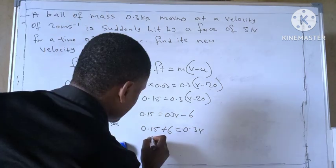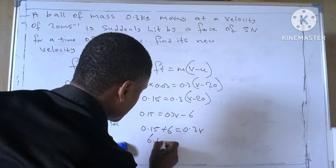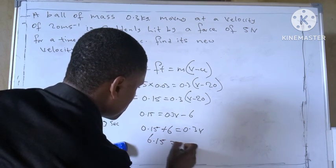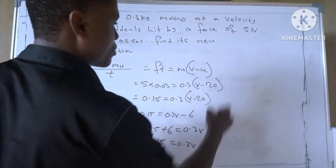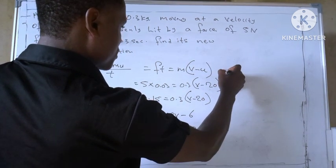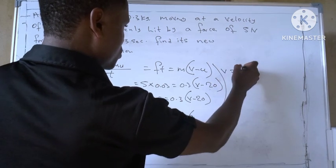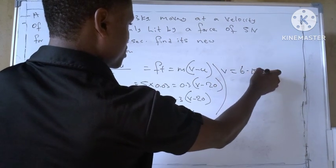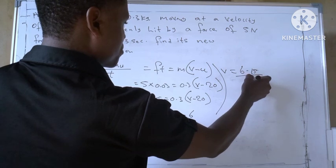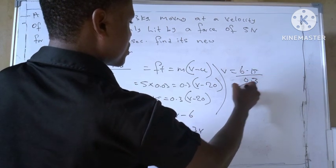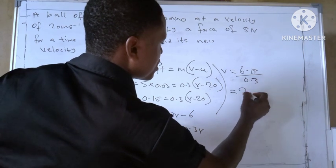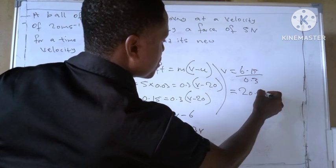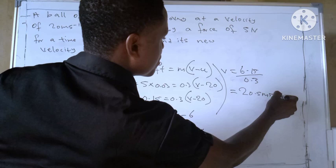So 0.15 plus 6 will give us 6.15, equal to 0.3V. Make V the subject of the formula, so we have V equal to 6.15 divided by 0.3 to give us 20.5 meter per second.